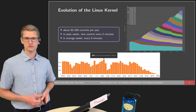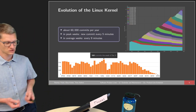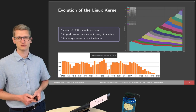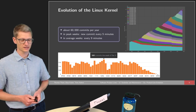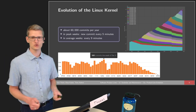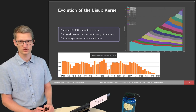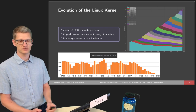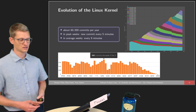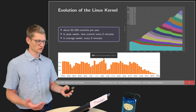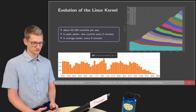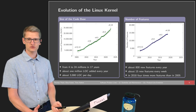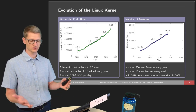We've also looked at the Linux kernel as an example. The Linux kernel is developed with about 60,000 commits per year. In peak weeks, there's a new commit every five minutes, and in average weeks every nine minutes. We also see that a large amount of the code is actually very old and has been there for a long time. We've looked at the evolution of the Linux kernel from different angles.